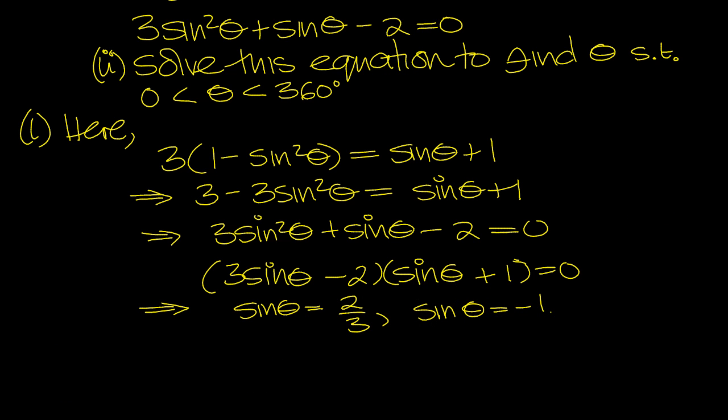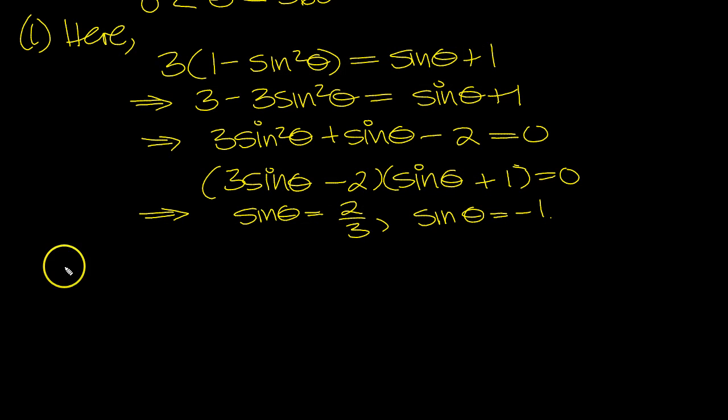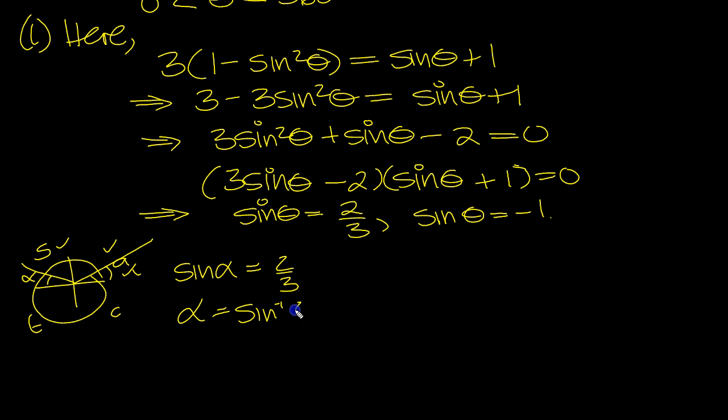So we're solving between 0 and 360. Let's have a look at these. Sinθ = 2/3. Sin is positive using CAST. Sin is positive here and here, so draw two lines. Mark off the alpha, which is the associated acute angle, and simply write sin(α) and drop the negative if there is one to drop.